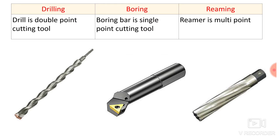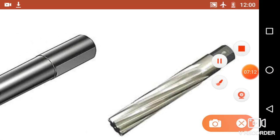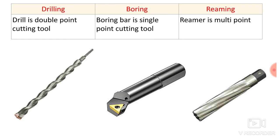For reaming, the reamer is a multi point cutting tool because the cutting action takes place with the help of multiple cutting edges. It has a number of cutting edges and it can remove material along the periphery of the drilled hole. To summarize: the drill is a double point cutting tool as it has two cutting edges at its bottom; the boring bar is a single point cutting tool; and the reamer is a multi point cutting tool with a number of points for material removal.